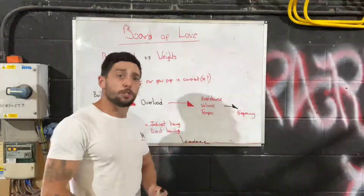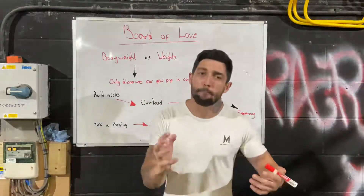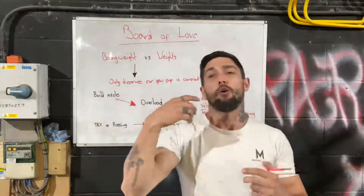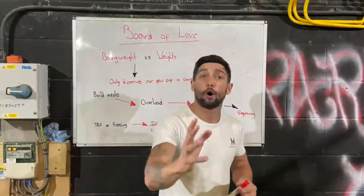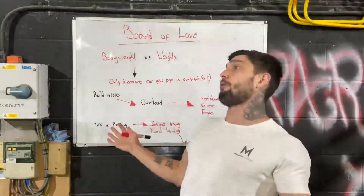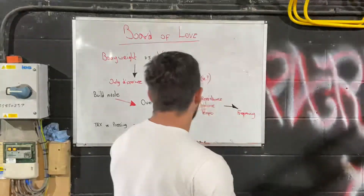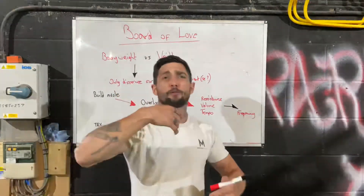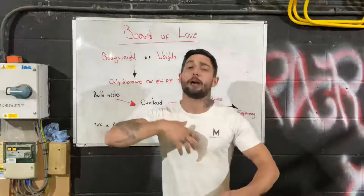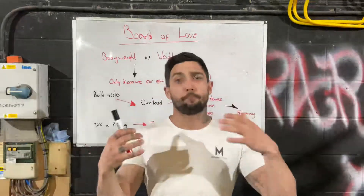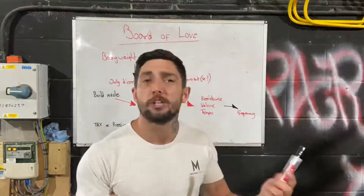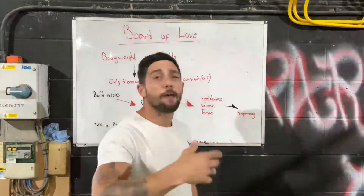First is resistance — so that's adding weights or dumbbells, using a dumbbell or a barbell in a pressing or pulling motion. For bodyweight, you can add resistance using things like a weighted vest or resistance bands. Second is volume — the amount of reps you do. Increasing the volume of repetitions helps build muscle. You can do that with bodyweight too — instead of 15 press-ups you do 20. Same principle with weights.